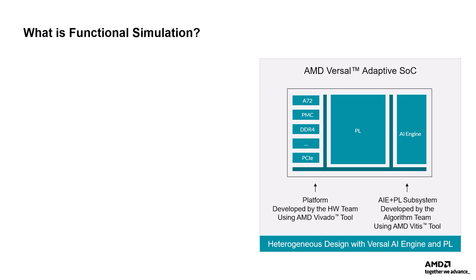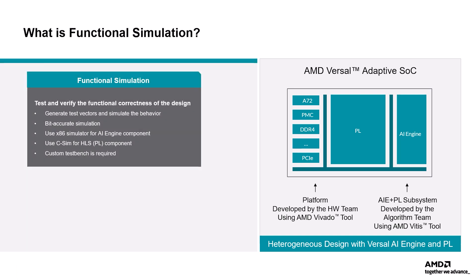Versal designs can have an independent PL component or an AI engine component, or they can be heterogeneous designs integrating both the PL and the AI engine, which requires co-simulation. Before this is implemented on the actual hardware, it is recommended to perform functional simulation to ensure logical correctness before proceeding to hardware emulation or actual hardware implementation. When developing AI engine graphs and kernels, functional simulation is essential for verifying the design behavior and identifying errors.